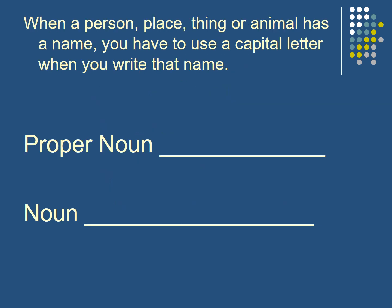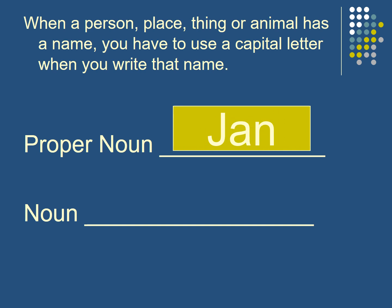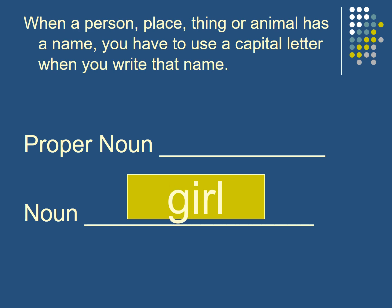When a person, place, thing, or animal has a name, you have to use a capital letter when you write that name. For example, the proper noun Jane — like this, I have to write it with a capital letter. When I say the noun, it's girl. The word girl is a noun, so I don't have to capitalize it. But the proper noun is Jane.